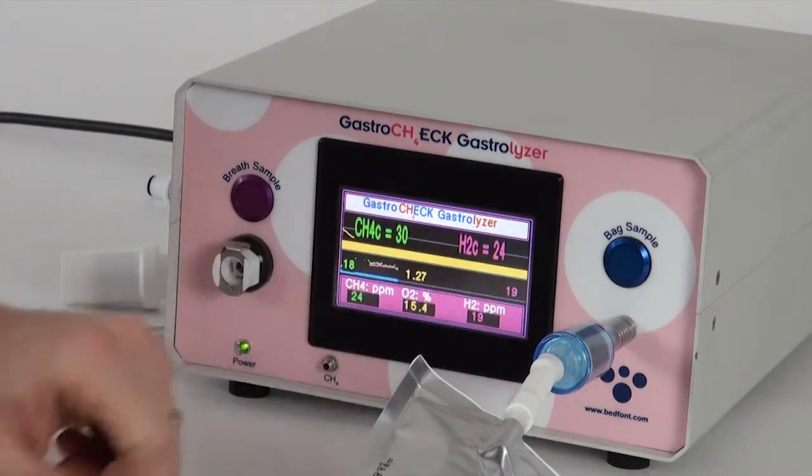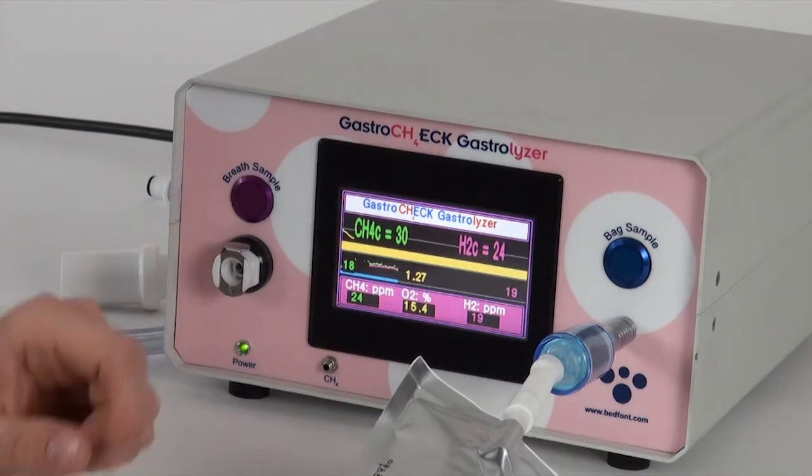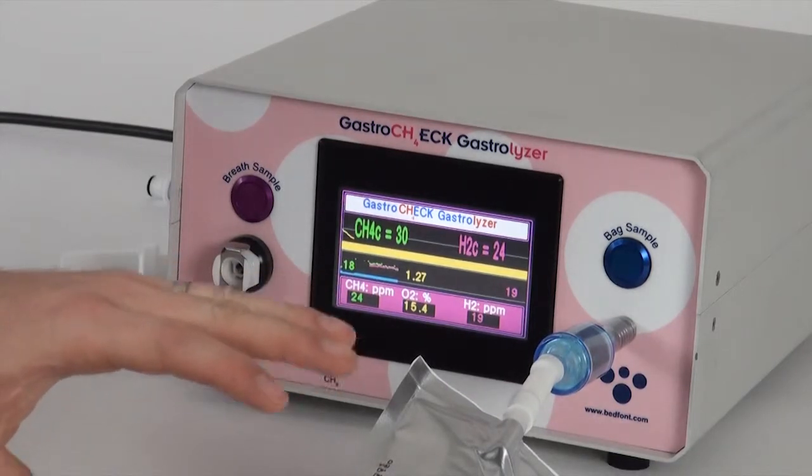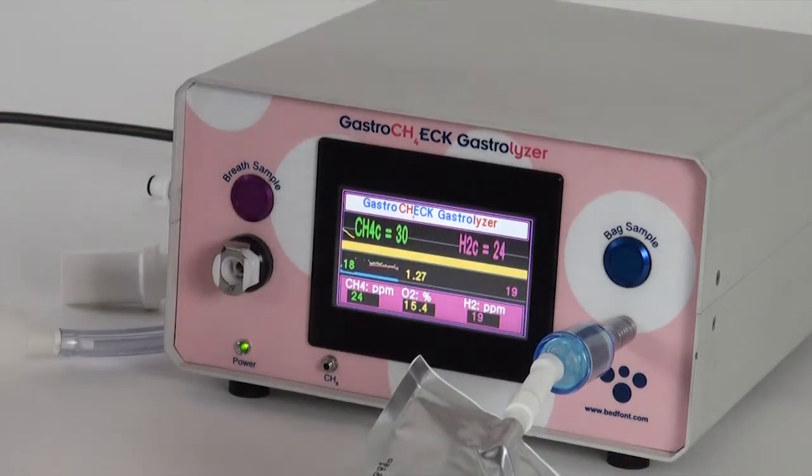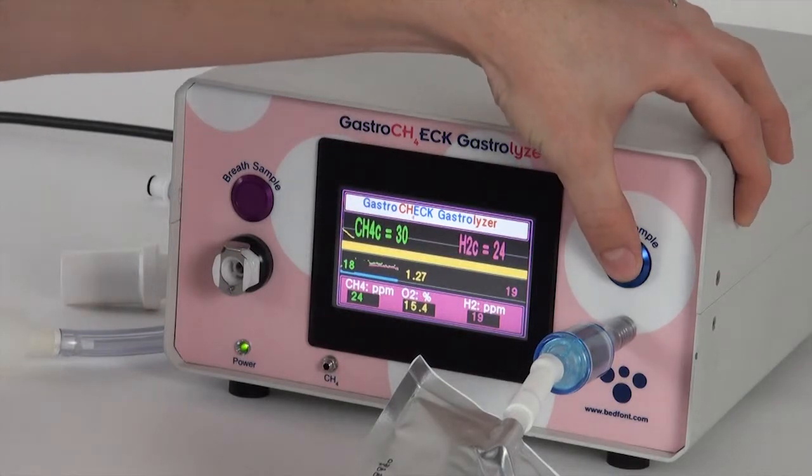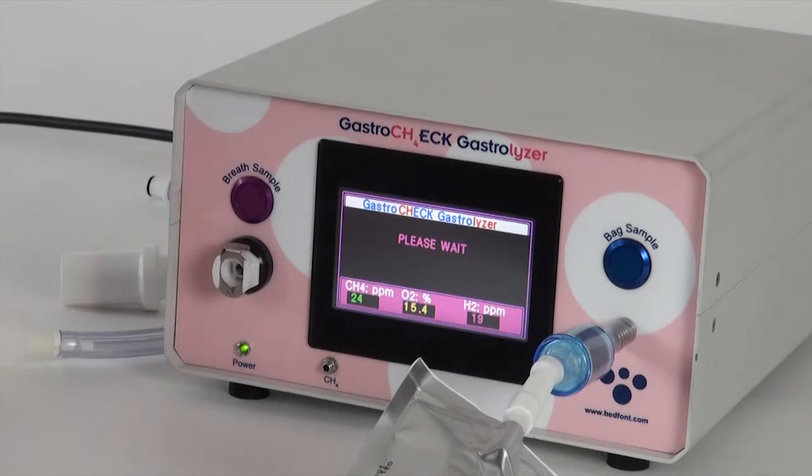So it now uses the correction factor, changes that 1.27 correction, and then gives us the 30 on the CH4 and 24 on the hydrogen, which is again relatively close to the reading we had in the first place. But because there's more oxygen in the bag, it needs to do a bit more calculation. And to stop that sample, you just press the button on the screen and it restarts it again. And that's how to do a breath test.